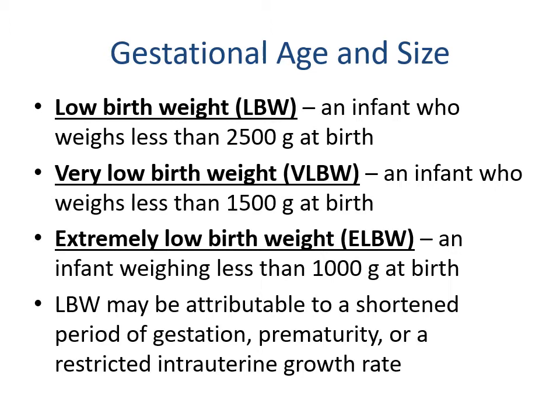Looking at definitions: low birth weight is an infant who weighs less than 2,500 grams at birth. Very low birth weight is less than 1,500 grams. Extremely low birth weight is less than 1,000 grams — that's a kilogram, or less than 2.2 pounds. Low birth weight may be attributable to a shortened gestation, prematurity, or restricted intrauterine growth rate.